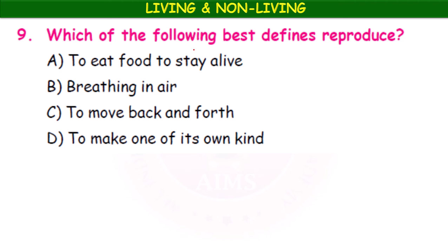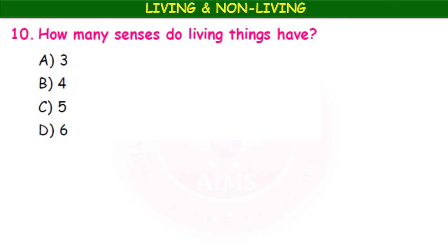Which of the following best defines 'reproduce'? The options are: to eat food to stay alive; breathing in air; to move back and forth; or to make one of its own kind. Reproduction is the process of making one of its own kind — a cat produces a kitten, a lion produces a cub. How many senses do living things have? We have 5 senses: eyes, ears, nose, tongue, and skin.